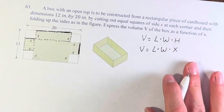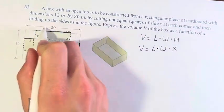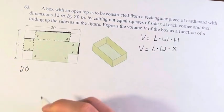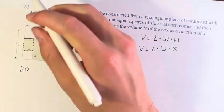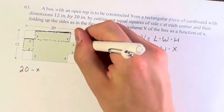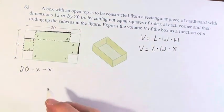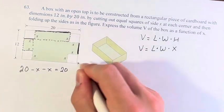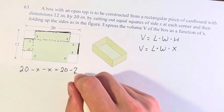So we have 20 as this whole side here. 20, cutting out this part minus x, cutting out this part minus another x, leaves you with just this. So therefore, the length of the box is equal to 20 minus 2x.